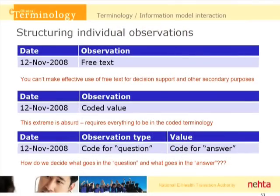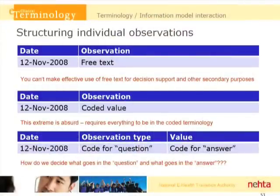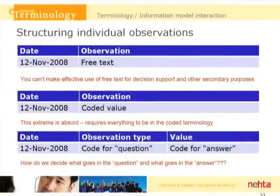If we're going to structure individual observations, the simplest way is to have a field for the date and a field for the observation, and you type in free text. But we really can't make effective use of free text for decision support. So maybe you want to replace that free text with a coded value. But requiring everything to be in the coded terminology is an absurd extreme. Another common approach is to divide up the coded things into observation types or questions and values.